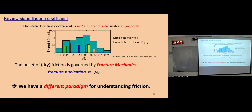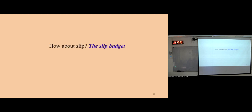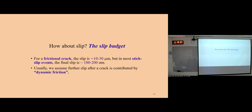Until now, we have a totally different paradigm for understanding friction. Something we last mentioned is: during sliding, there is slip. So we ask: how does slip accumulate? What is the slip budget? For a single friction crack, the slip is at most about 30 micrometers. But in most stick-slip events, the final slip is almost 100 micrometers.